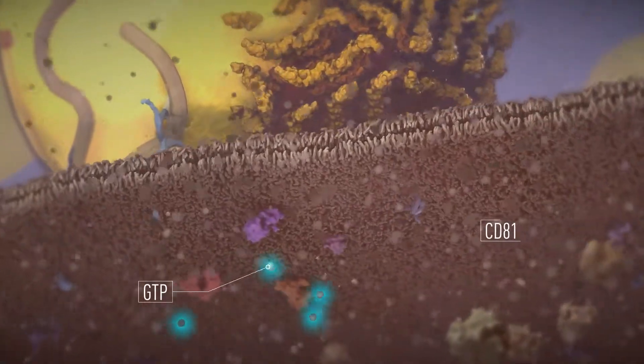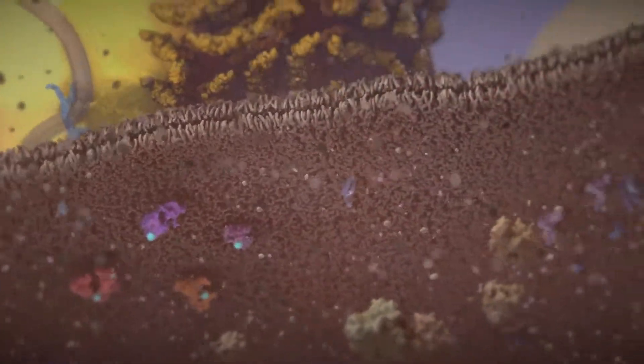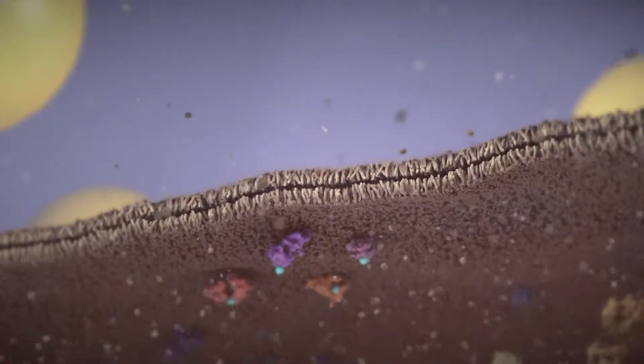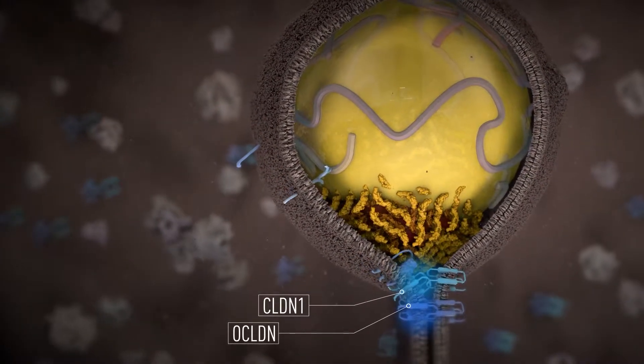Signal transduction is initiated, promoting lateral movement of the viral complex to a hepatocyte tight junction. As the complex reaches a tight junction, CD81 interacts with Claudine1.